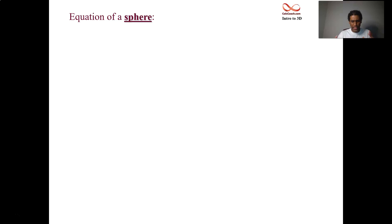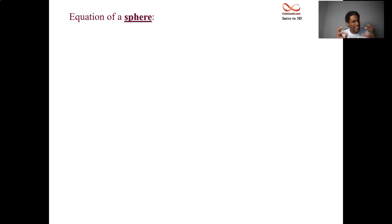Hello. This is one last video in this Introduction to 3D coordinate system. We want to look at spheres now. We know about circles, but what about spheres? Remember the equation of a circle, generically centered at (h, k) with a radius of r: x minus h quantity squared plus y minus k quantity squared equals r squared.